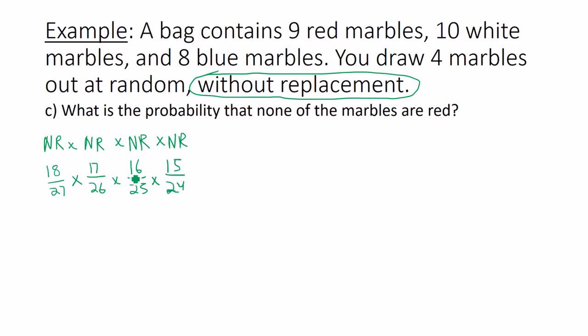You can go ahead and multiply your tops together, bottoms together, or you could simplify your answer. 18 divided by 27, that would be 2 thirds. 17 over 26 does not simplify. 16 out of 25 does not simplify, but 15 over 24, that's 5 over 8.